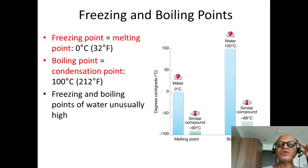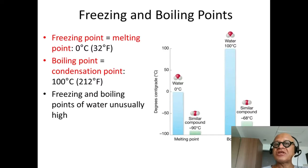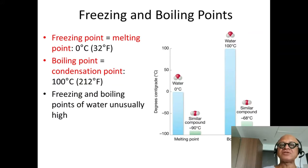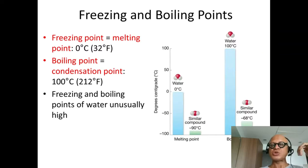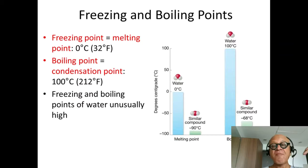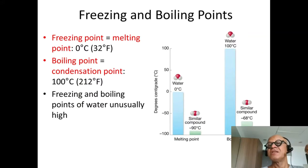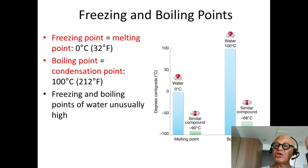The boiling point equals the condensation point, which for water is 100 degrees centigrade or 212 degrees Fahrenheit. Adding energy to water causes it to boil at 100 degrees centigrade; removing that energy causes it to condense. Notably, the freezing and boiling points of water are unusually high. This figure shows that water's melting point is 0°C, but for a similar compound without water's special properties — the bent molecule, hydrogen bonds — the melting point should be minus 90 degrees centigrade, and the boiling point should be minus 68 degrees centigrade.